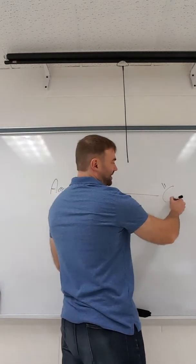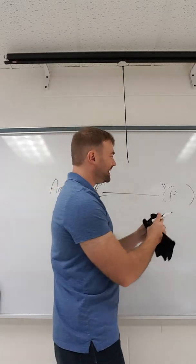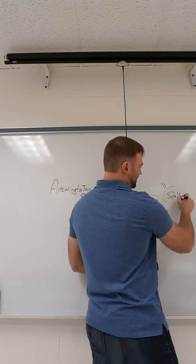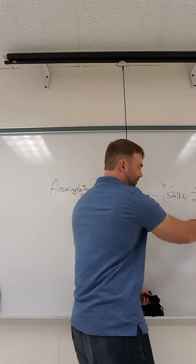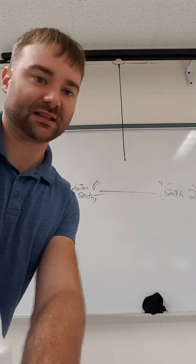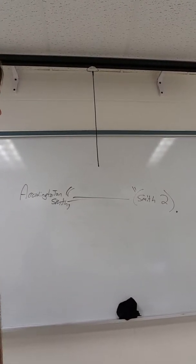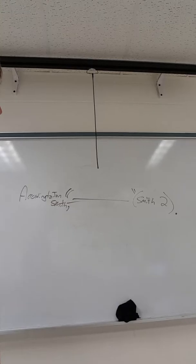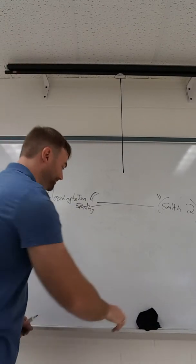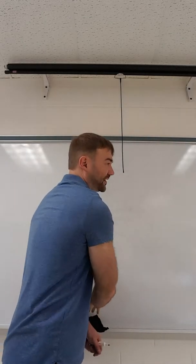At the end of the quotation, we always put the page number. If we've not listed the author's name, we would put — let's say it's John Smith — we would put 'Smith' and maybe 'page two' in parentheses, and then the period would be on the outside of the parentheses. So we've got Smith, page two, and the period is on the other side of the parentheses.